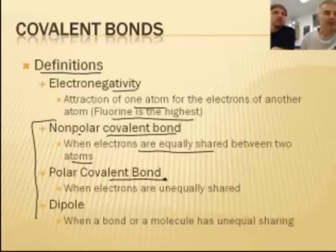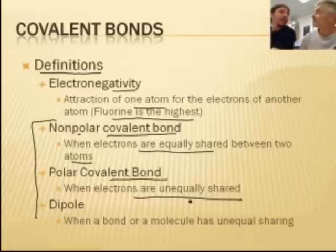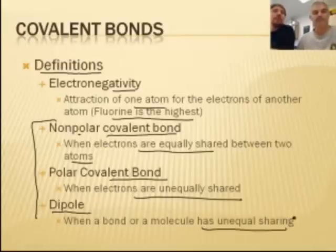And there's polar covalent bonds — that's when electrons are unequally shared. One of the atoms kind of gets the electrons more often than the other. Kind of like when my kids share — they don't really equally share, but they'll sort of let the other kid touch the toy. And lastly, a dipole — that's when a bond or molecule has unequal sharing. So if we have a polar covalent bond with unequal sharing, it creates a dipole.